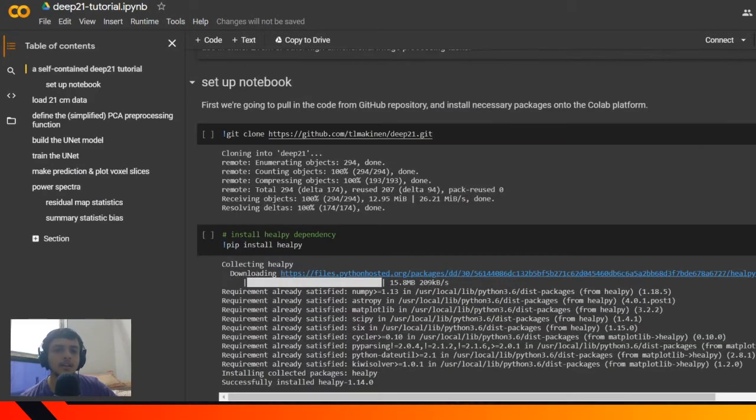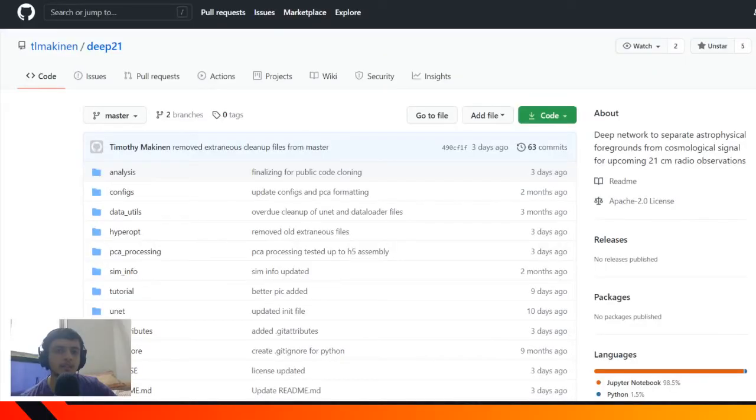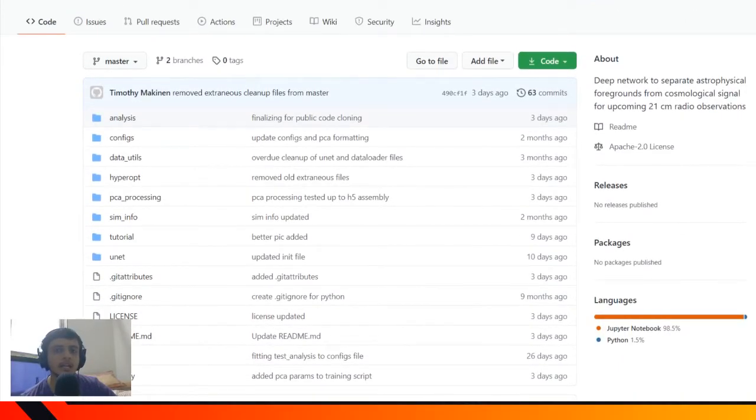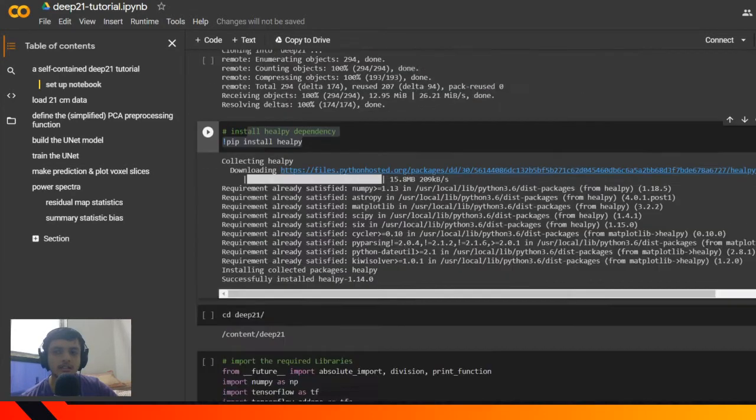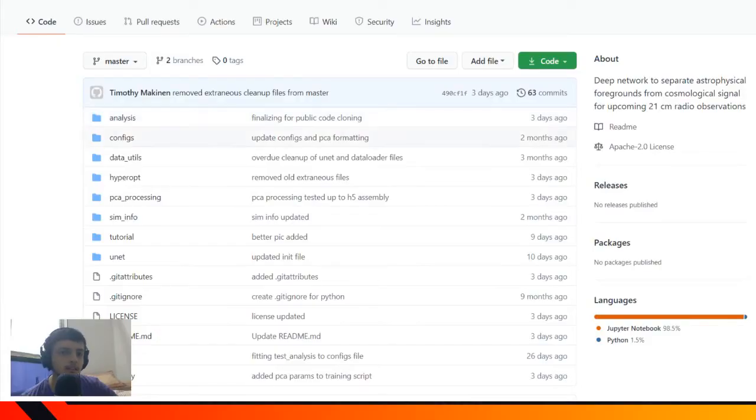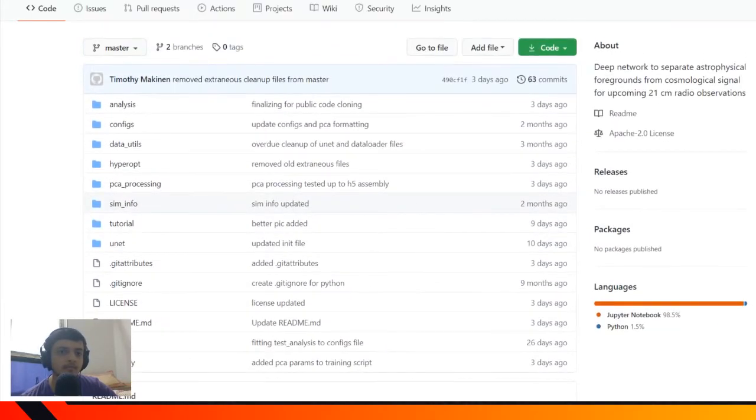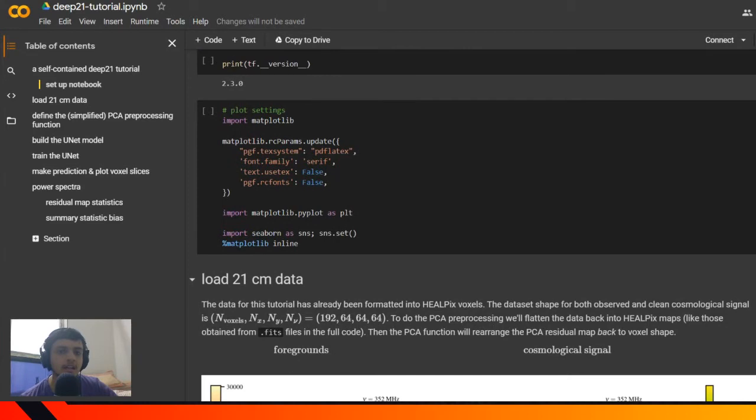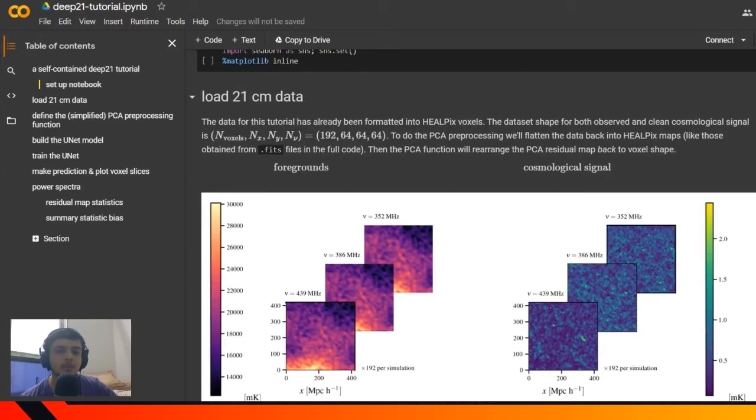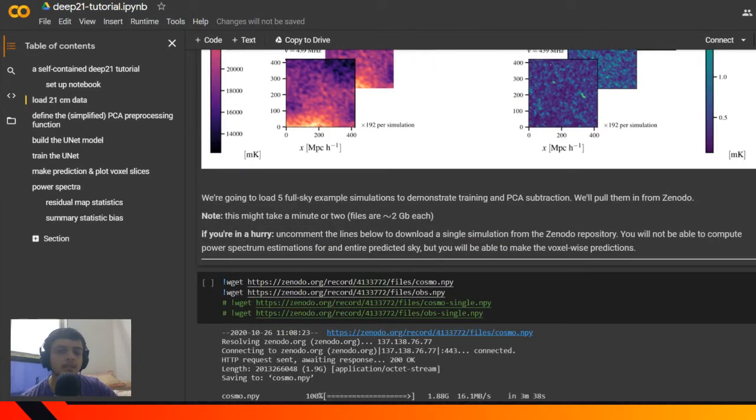Without further ado, I'll go onto the code. They start with just cloning the repository. There's one Python package called HEALPix that they use and it gets installed. In this Deep21 folder, they import various functions and array handling functionalities. First of all, they plot the original 21 centimeter data using matplotlib.